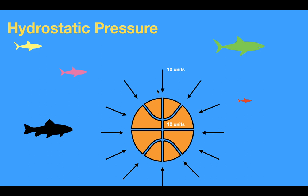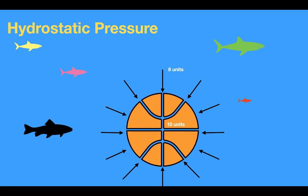So what's going to happen to the size of the ball? Well, since the pressure outside is equal to the pressure inside, the ball would remain the same size. Now what if we were to decrease the pressure outside the ball? Well, if you were to decrease the pressure outside the ball to 8 units, which is less than the pressure inside, the ball would expand.